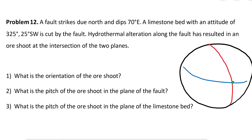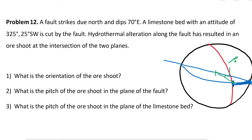The same applies for the limestone. The pitch of the orshoot on the limestone will be a different angle — call it beta. You count beta from the primitive circle along the limestone great circle to the intersection point. For example, this angle might be about 20°, counted from the east.